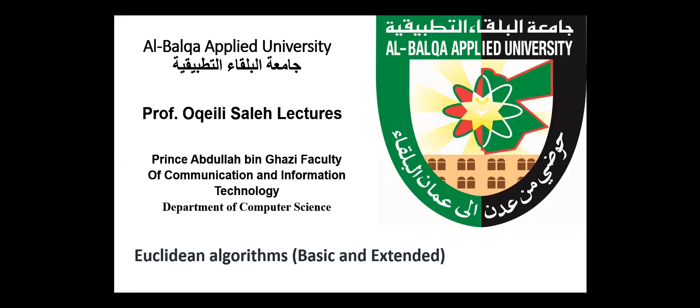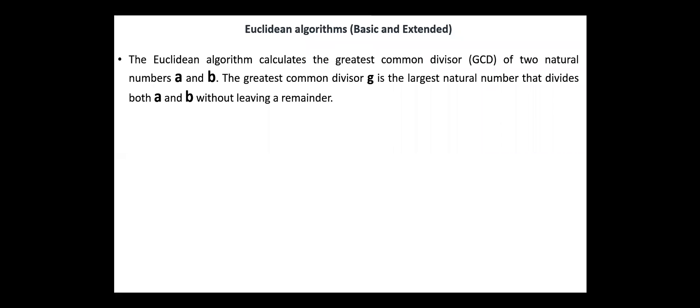Hello, everyone. Today our topic is the Euclidean Algorithm, Basic and Extended. The Euclidean Algorithm is named after the Greek mathematician Euclid, who described it in 300 BC. It is an example of a step-by-step procedure for performing a calculation according to well-defined rules, and is considered one of the oldest algorithms in use.